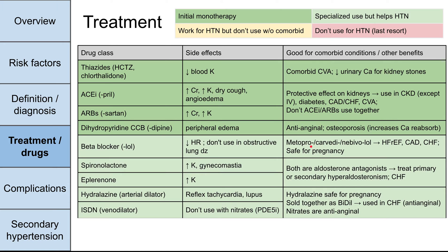There are drugs with specialized use that are not necessarily first-line monotherapy for blood pressure, but still have an effect on it. Beta blockers, ending in '-lol,' decrease heart rate as a side effect, so avoid them in patients with a low heart rate. They also don't work well in obstructive lung disease — they have the opposite effect of short-acting beta agonists like albuterol, so avoid them in asthma or COPD. Specific beta blockers — metoprolol, carvedilol, and nebivolol — work particularly well in heart failure with reduced ejection fraction, coronary artery disease, and congestive heart failure. Beta blockers are also noted to be safe for pregnancy.